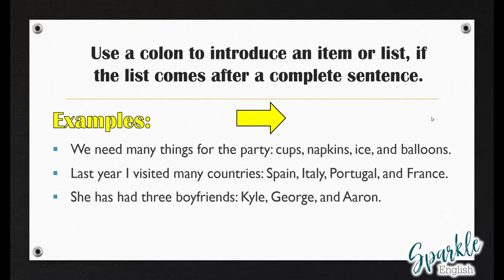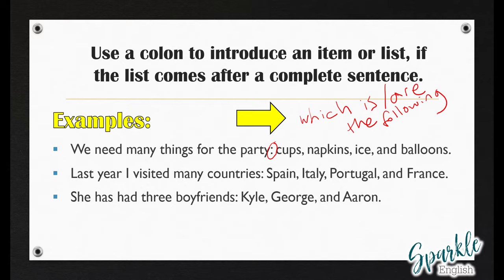The first rule: use a colon to introduce an item or list if the list comes after a complete sentence. For example, 'We need many things for the party: cups, napkins, ice, and balloons.' You can see here we have placed a colon after 'party.' I want you to view the colon almost like an arrow, because it's pointing to the things that we need for the party. The colon almost means 'which is' or 'which are the following.' Rather than writing 'which are,' we just place a colon.